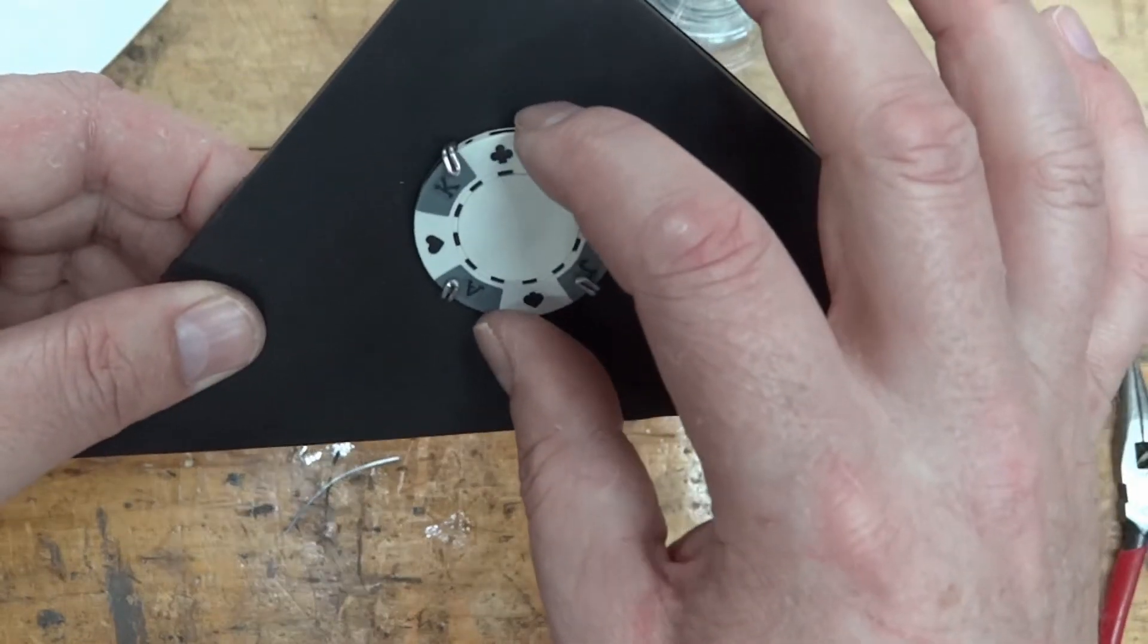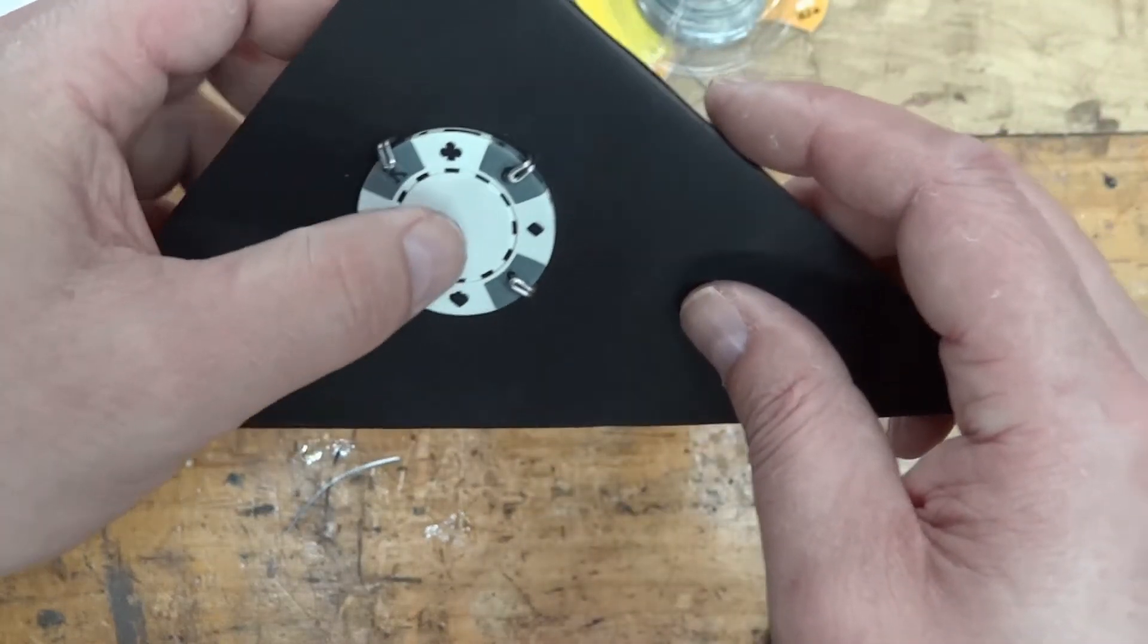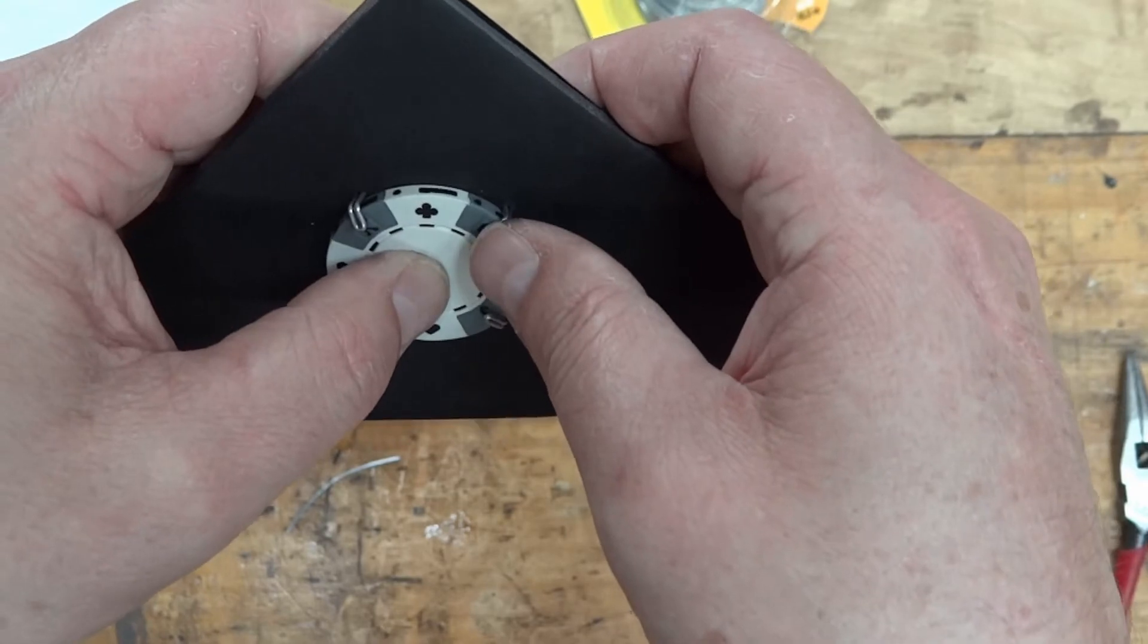You can see the coin still spins a little bit, so what you want to do is hold a piece in, hold one of them in and just bend the back.